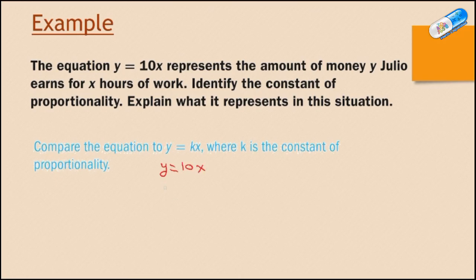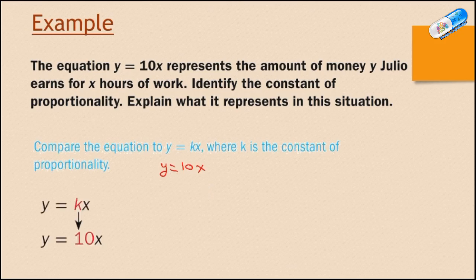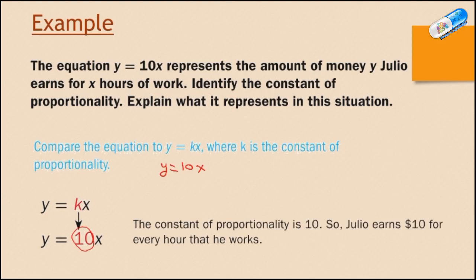First, we are going to compare the equation y equals kx with the equation y equals 10x, which is given in the example. Compare them. Do they look alike? Yes, they look alike. So where y equals kx, and here y equals 10x in the example, so 10 should be the k. So the constant of proportionality in that case is 10. And that means that Julia earns $10 for every hour that he works.